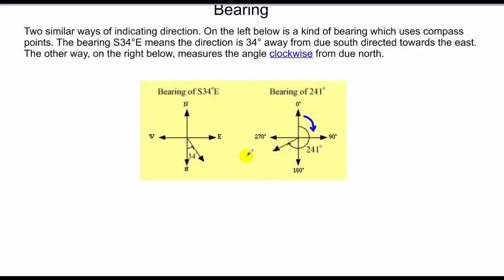Another way of stating bearing is in this directional fashion. In other words, south 34 degrees east. What that means is start at the initial direction, south, and then go 34 degrees to the east. So that's another way of stating bearing: where you start, how many degrees you move, and in which direction you move towards.